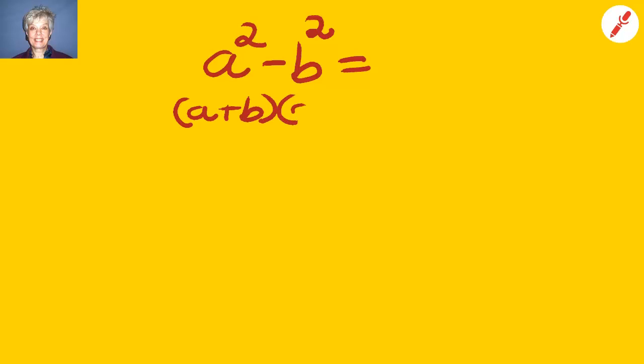Remember back in chapter four, back in one of the previous modules, when you learned about multiplying polynomials, we multiplied conjugates. These are conjugates. When you multiply conjugates, you get this. When you multiply this, you get two conjugates.